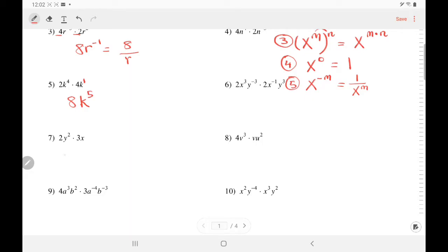Number 7: Multiply 2 and 3. X and Y are not like terms, so we just write them down alphabetically. X comes first, and then the Y.